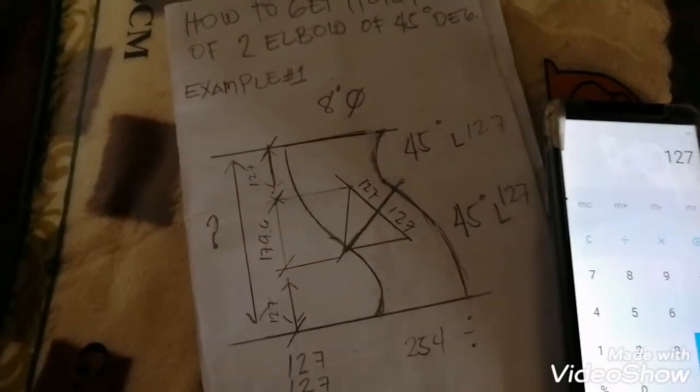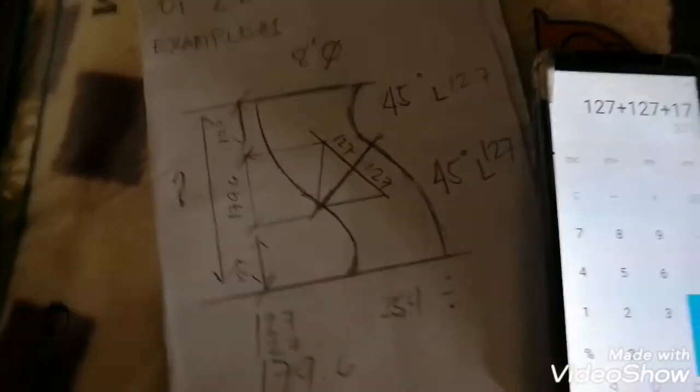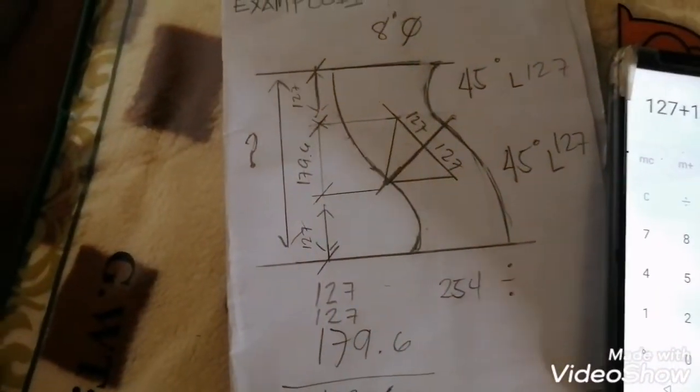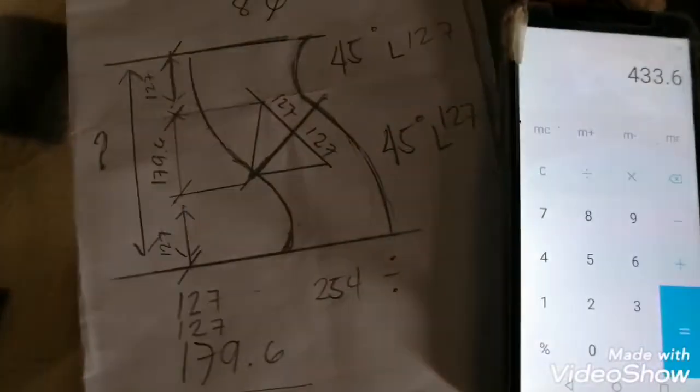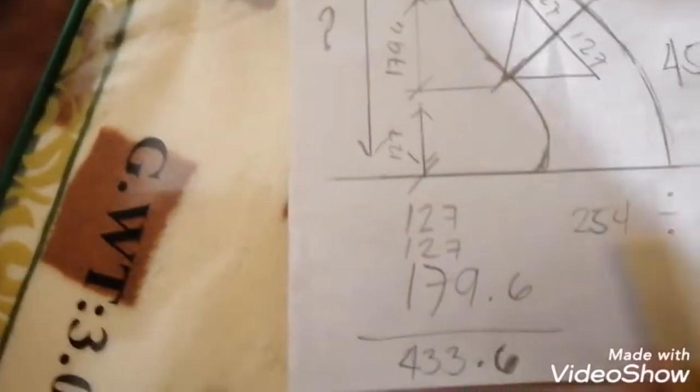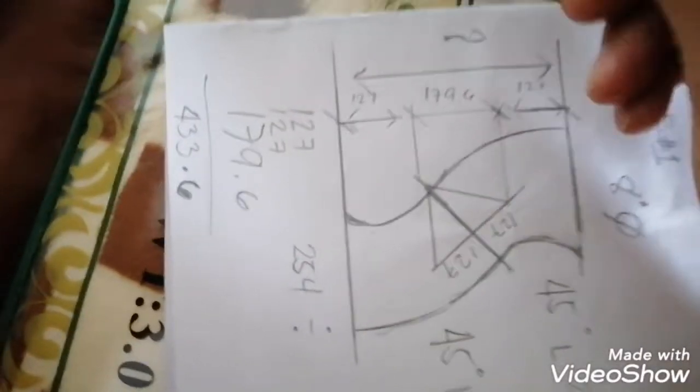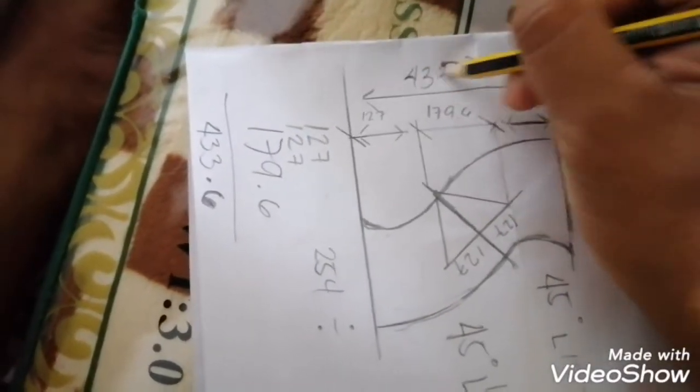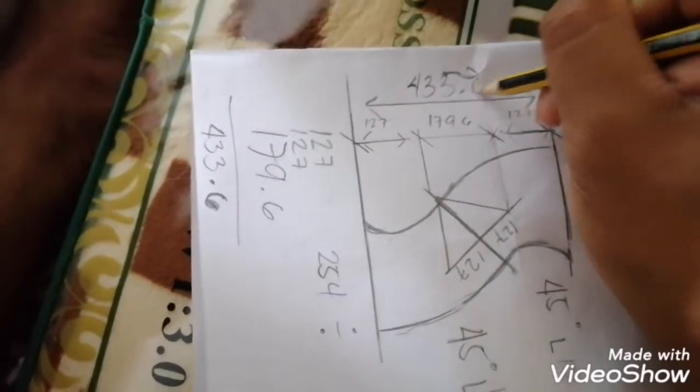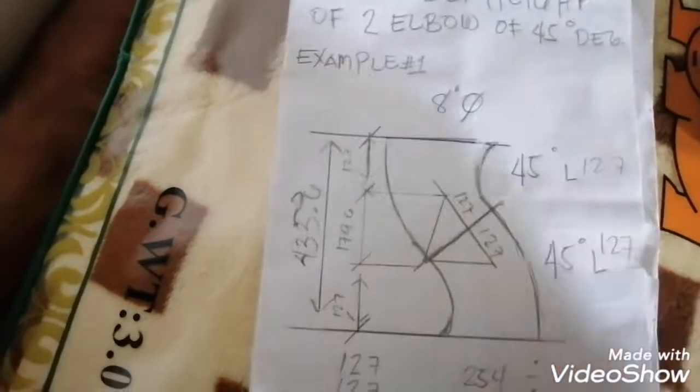My point is 127 plus 127 plus 179.6 equals 433.6. This is our height of two 45s: 433.6. This is 433.6.